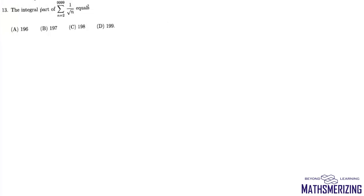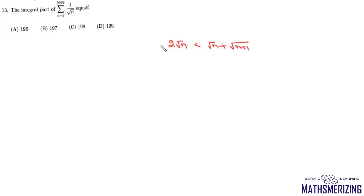Question number 13 involves finding the integral part of a summation. We can write that 2√n is less than √n + √(n+1), and it will be greater than √n + √(n-1).